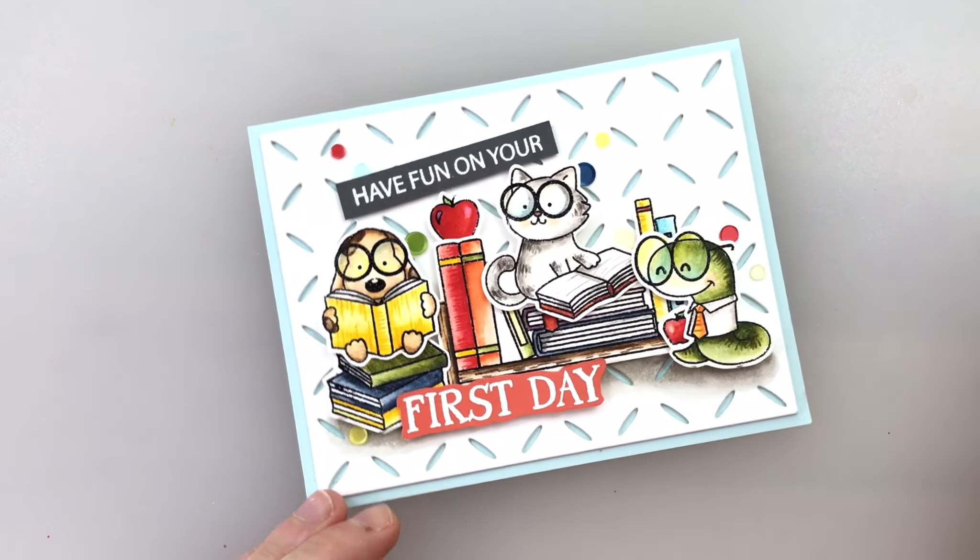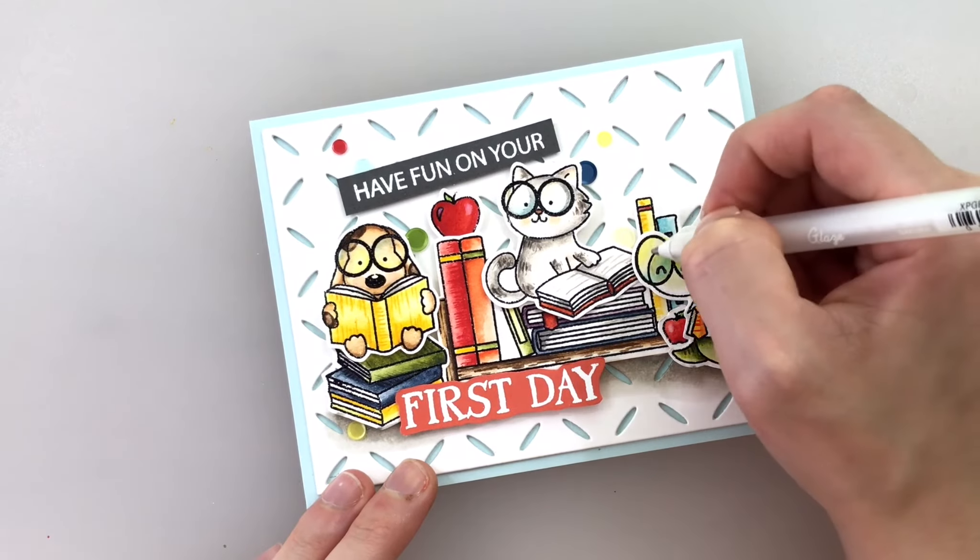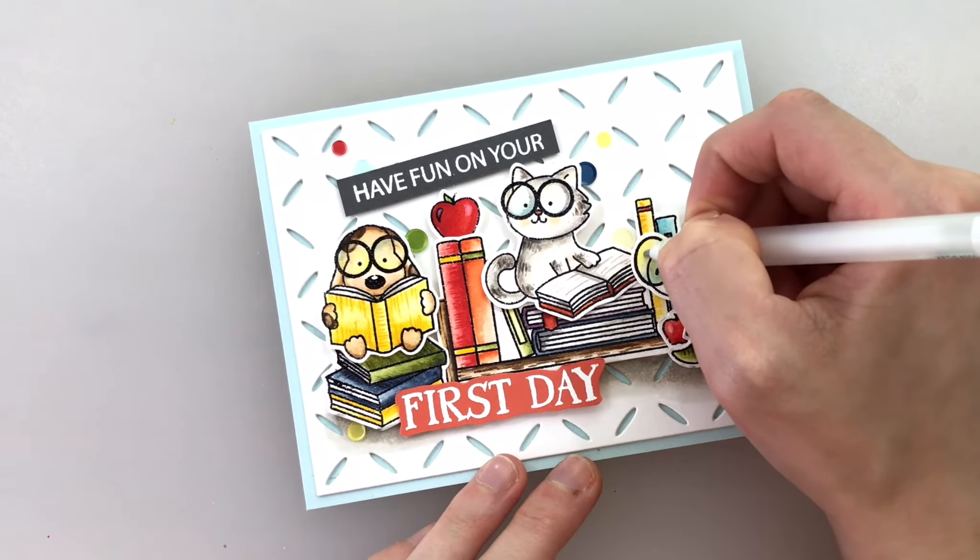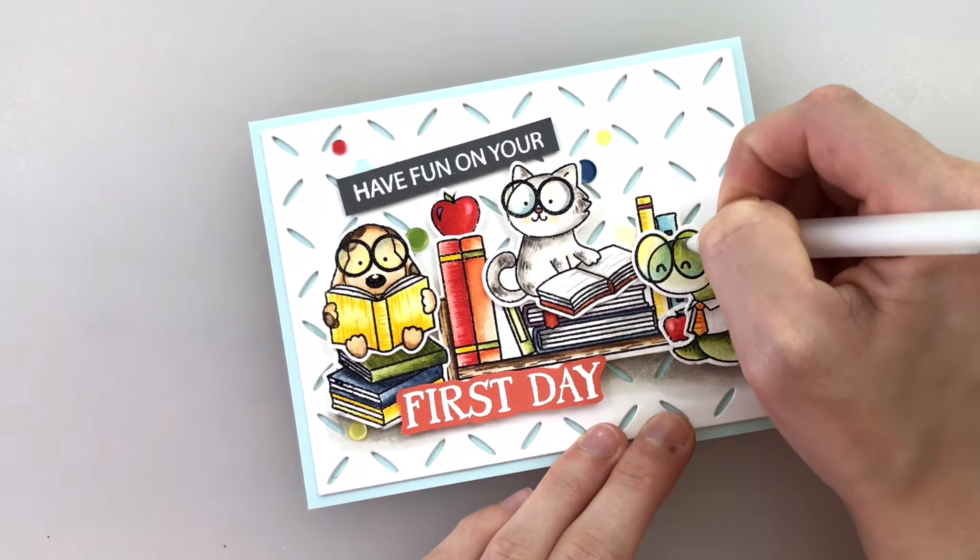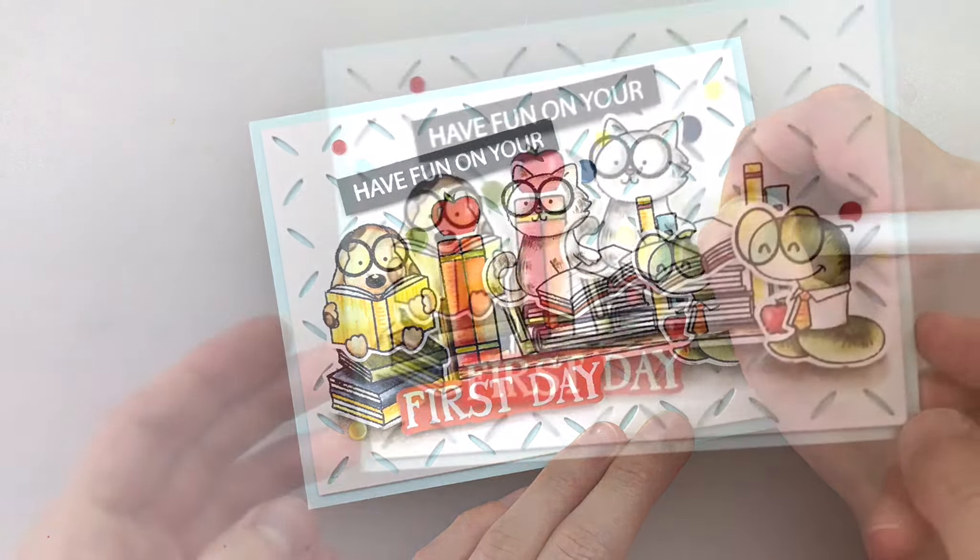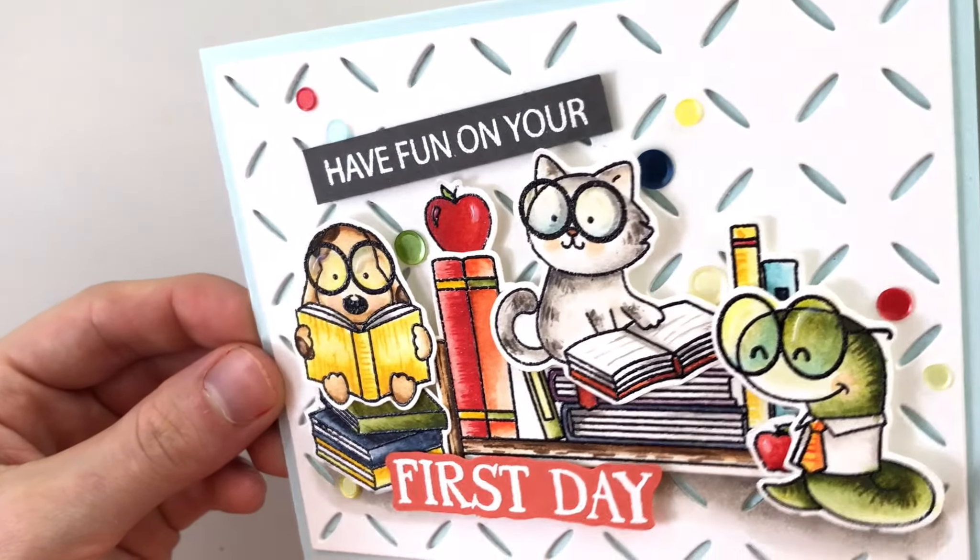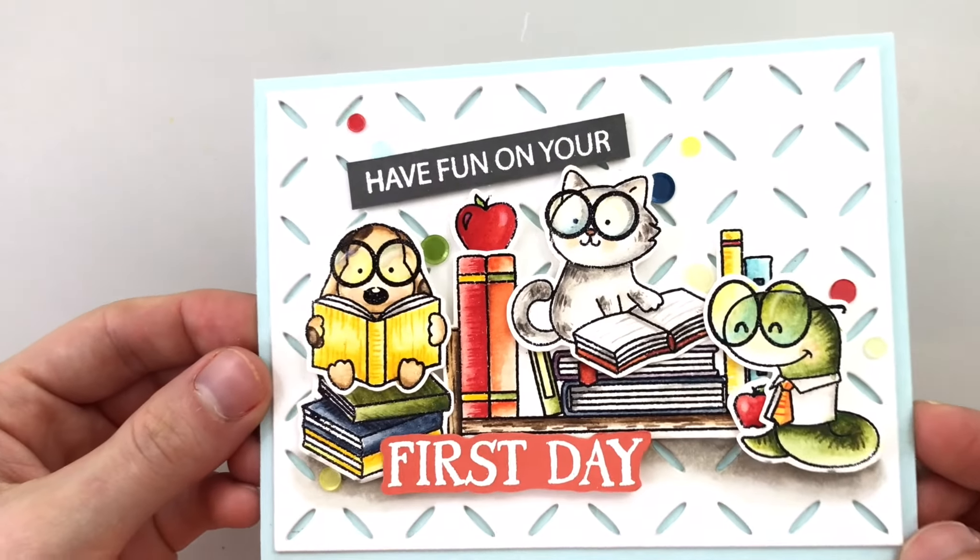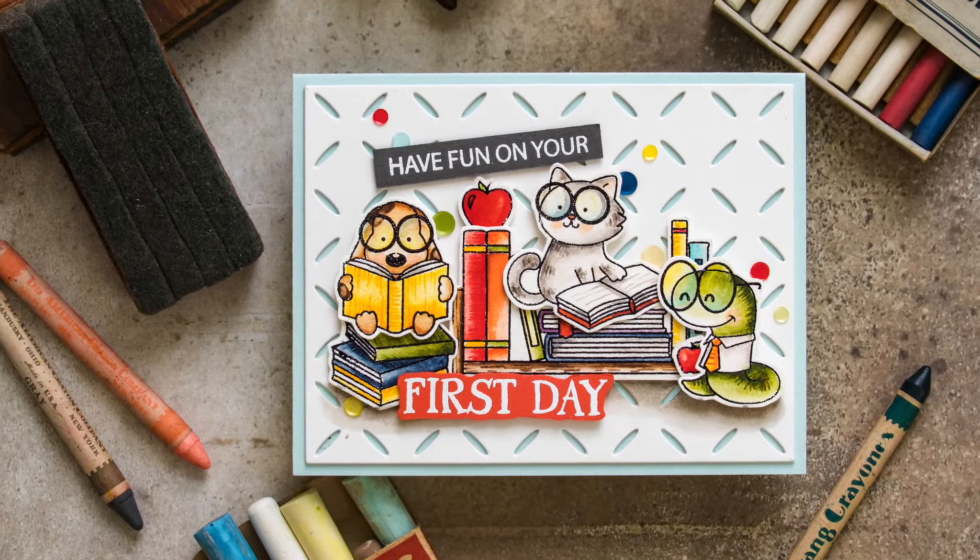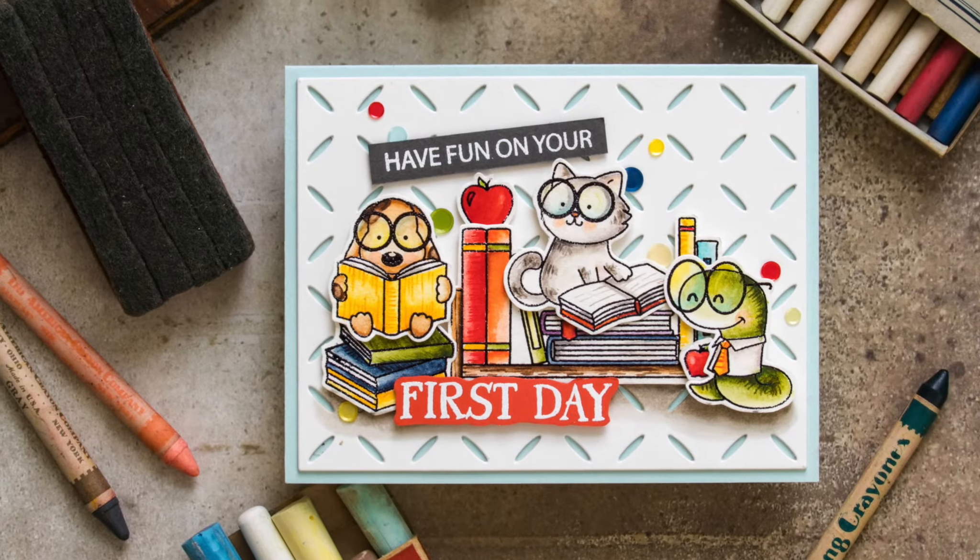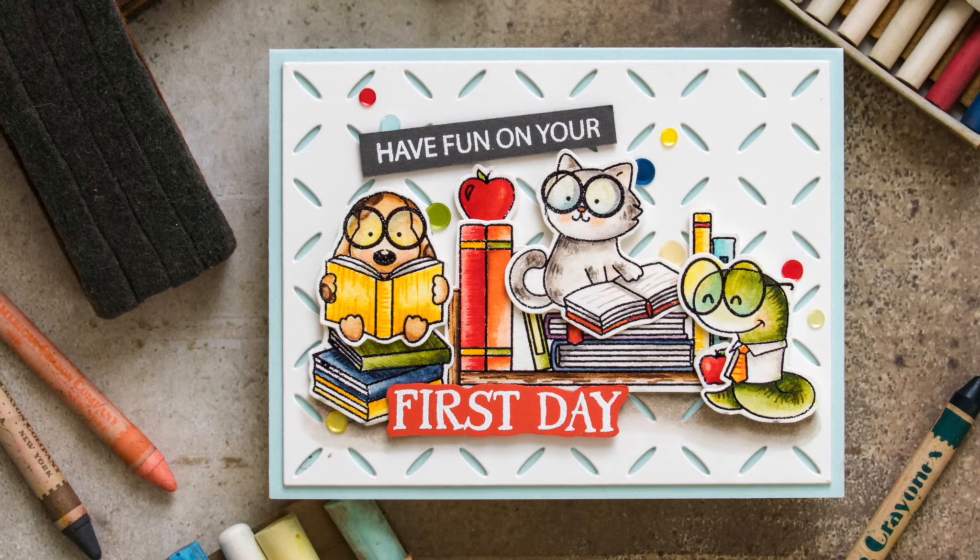There are a few sequins from Studio Katia added around these animals but I also wanted to show you how I added some additional shininess to our highlight areas. I'm using a Sakura clear gel pen and this gel pen creates a really beautiful clear shine once it dries. I'm adding this to the shiny parts of the apples and also little highlights on the glasses. This makes these critters look so much more realistic and it creates a really beautiful effect on the glasses giving them that great shiny dimension.